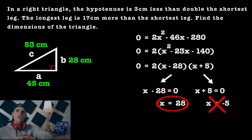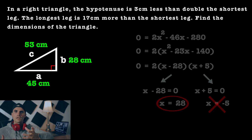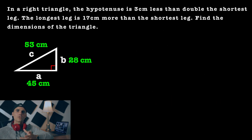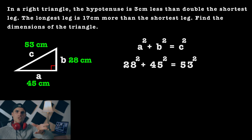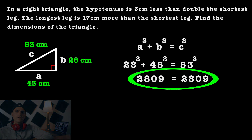You can also check your answer by plugging the dimensions into the Pythagorean theorem to make sure everything holds. When you do that, 28 squared plus 45 squared does indeed equal 53 squared — both sides equal 2,809.